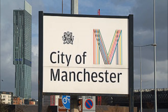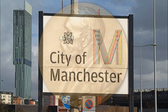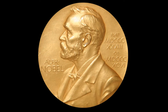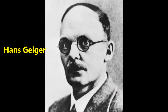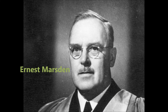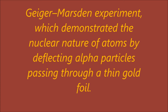In Manchester he continued to work with alpha radiation. Rutherford performed his most famous work after receiving the Nobel Prize in 1908. Along with Hans Geiger and Ernest Marsden in 1909, he carried out the Geiger-Marsden experiment, which demonstrated the nuclear nature of atoms by deflecting alpha particles passing through a thin gold foil.